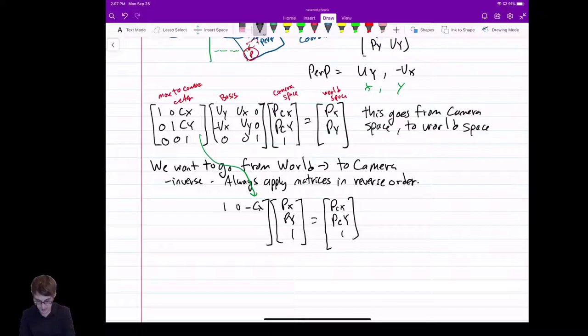So I can just do this. 1, 0, minus CX, 0, 1, minus CY, 0, 0, 1. Bam. Cool. So that's my inverse, and then I'll do my inverse of my basis.